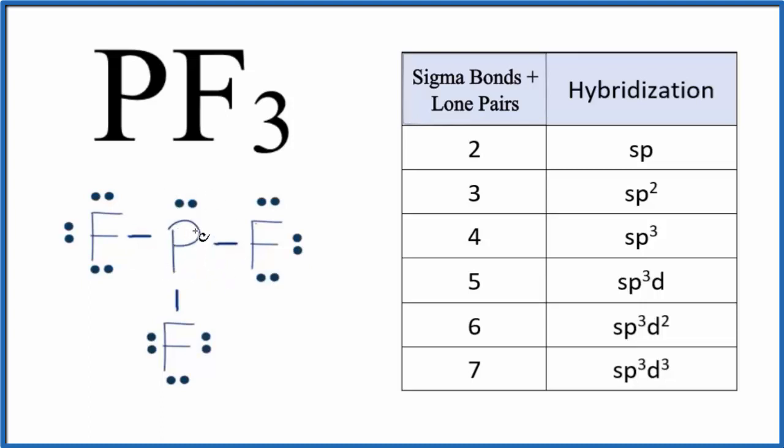how have the orbitals, the atomic orbitals of the phosphorus, how have they mixed to form hybrid orbitals? And then those orbitals, how do they overlap with atoms like the fluorine here?